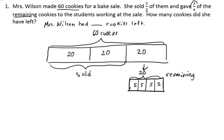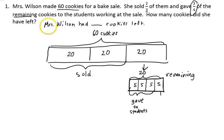Since she gave three-fourths of the cookies to the students, three of those sections represent the amount she gave to the students. Since the question asks how many cookies did she have left, this last piece shows the cookies that were left over. And you can see that Mrs. Wilson had five cookies left.